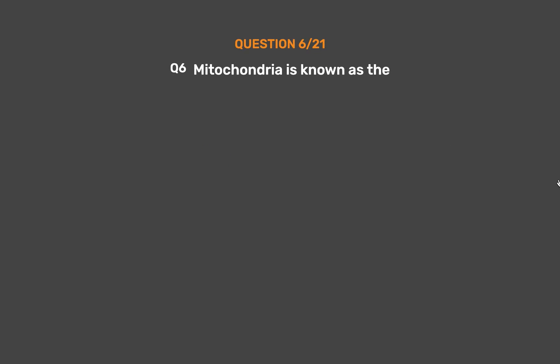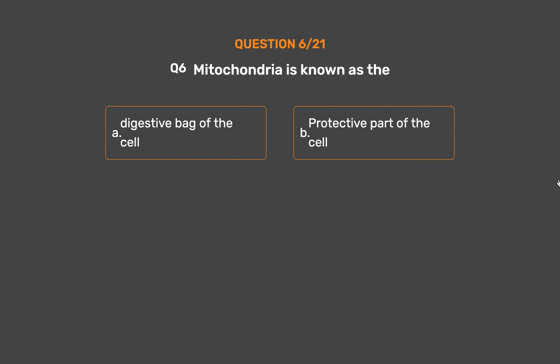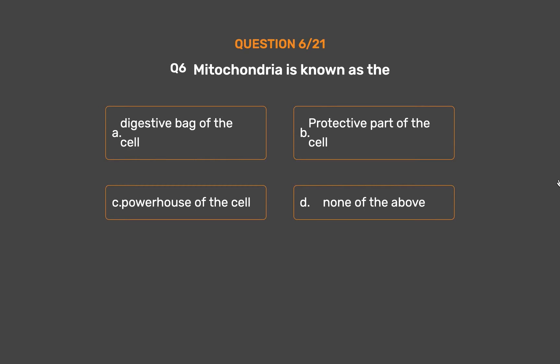Question No. 6: Mitochondria is known as the. Option A: Digestive bag of the cell. Option B: Protective part of the cell. Option C: Powerhouse of the cell. Option D: None of the above.